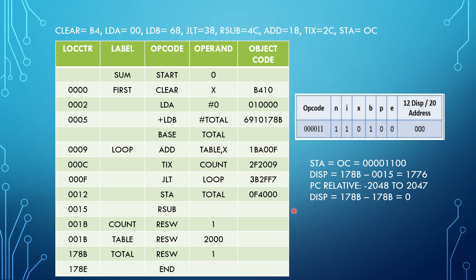Next we have STA total. It is a Type 3 instruction format. The opcode uses STA's most significant mnemonic bits. N and I are set to 1 (not immediate or indirect). X is 0 (no comma). The displacement value obtained is 1776, which does not fall between -2048 and 2047, so we use base relative addressing mode. In base relative mode, the displacement is TOTAL (178B) minus the base value (178B), which equals 0. The object code is 0F4000.